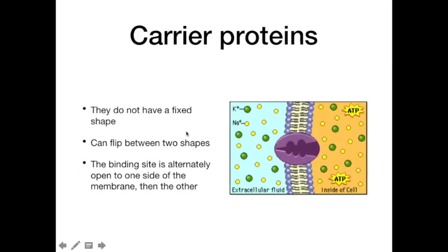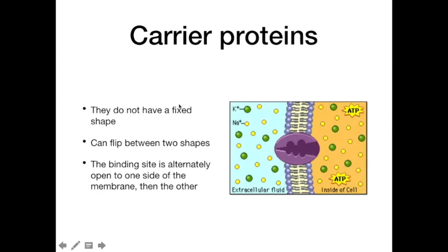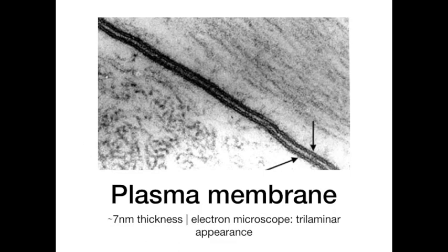Before moving on to channel proteins and carrier proteins, it's important to note that the plasma membrane structure we've been describing is the same in all membranes — which means that organelles inside the cell that have membranes all follow the same fluid mosaic structure.